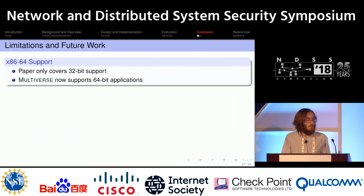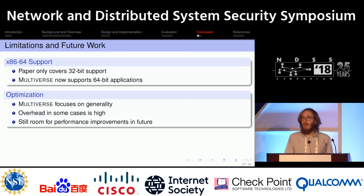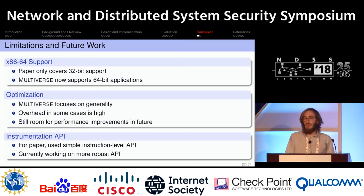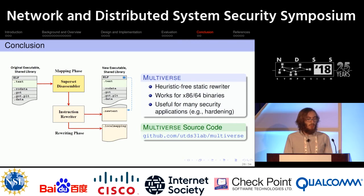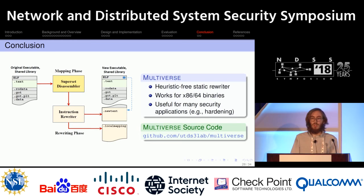In this talk and in the paper, we only discuss 32-bit binaries, but we actually now have 64-bit support for Multiverse, implemented since we submitted the paper. However, the performance could be better and we have ideas for improvement — that generality does hit us in performance in some cases. Our API is fairly primitive right now, but we're working on a C API to insert C code as well. In conclusion, we presented Multiverse, a heuristic-free rewriter for x86 and now 64-bit binaries, useful for many security applications. We demonstrated it works with a shadow stack, and the source code is available on GitHub at utds3lab/multiverse.